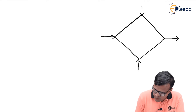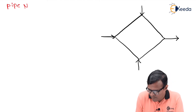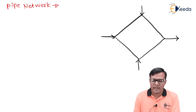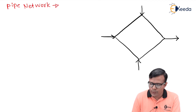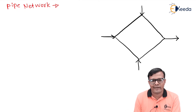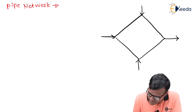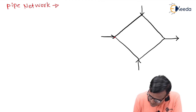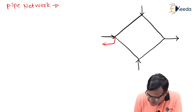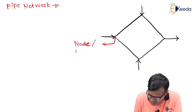Let us see what a pipe network is. As its name indicates, it is a network of two or more pipes which are intermittently connected with each other, in which there are some nodes. This junction point is called a node or junction.